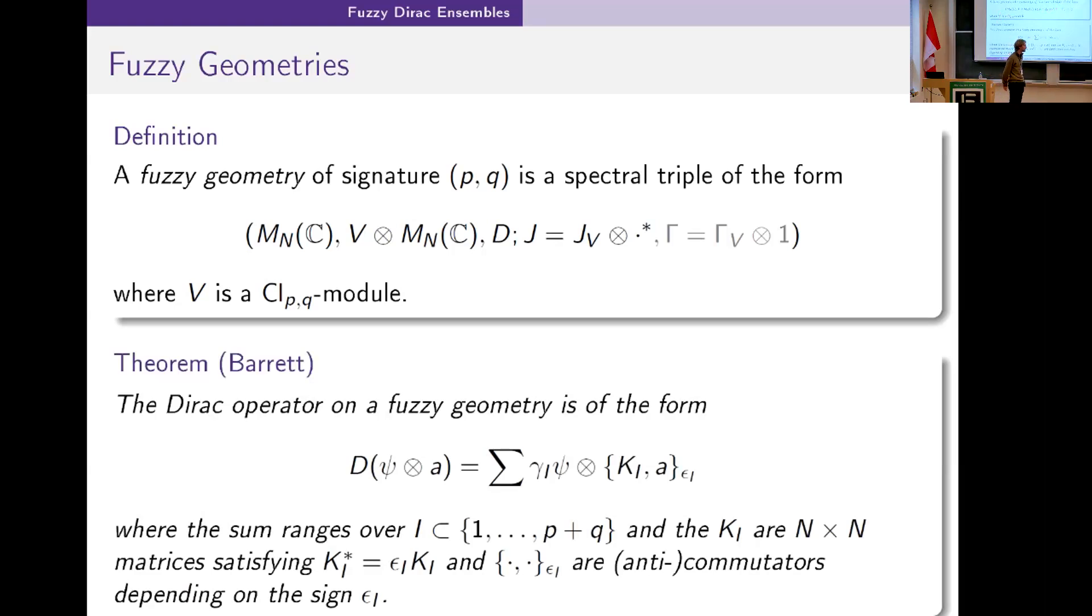It's parametrized by a set of self or skew adjoint matrices K_i, for i ranging over subsets of indices. You can make this theorem a little bit more precise.